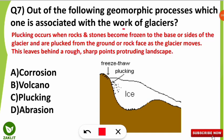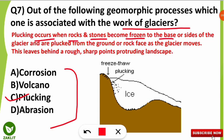The seventh question: out of the following geomorphic processes, which one is associated with the work of glaciers? The correct option is plucking. Plucking occurs when rocks and stones become frozen to the base or sides of a glacier. In this picture, the white area represents the glacier, and the dark-colored dots at the base and sides represent the rocks or stones that become frozen to the glacier.